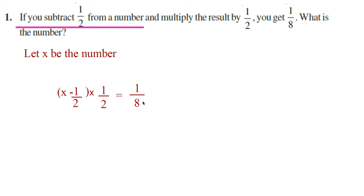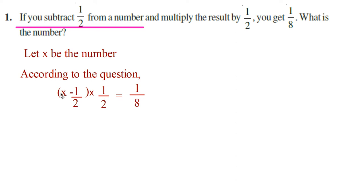According to the question, we can write: (x minus 1/2) into 1/2 is equal to 1/8. Now, multiply 1/2 with both x and minus 1/2 — that means remove the bracket. We get x times 1/2, which is x/2, minus 1/2 times 1/2, which is 1/4, is equal to 1/8.